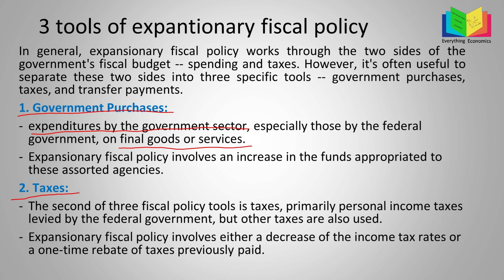The second tool is taxes — primarily personal income taxes levied by the federal government, but other taxes are also used. Expansionary fiscal policy involves either a decrease in income tax rates or a one-time rebate of taxes previously paid. When tax rates decrease, people pay less tax on their income and have more money available to spend, increasing economic activity. A tax rebate means the government returns a part of taxes already paid back to the people.